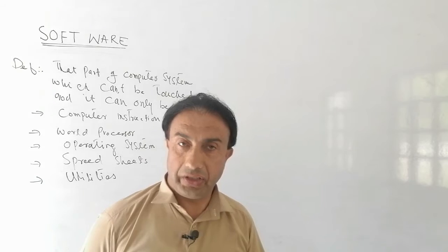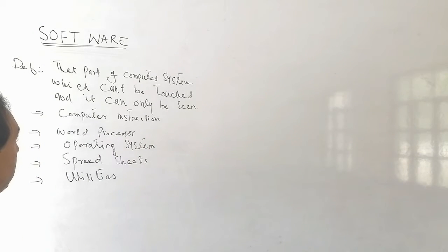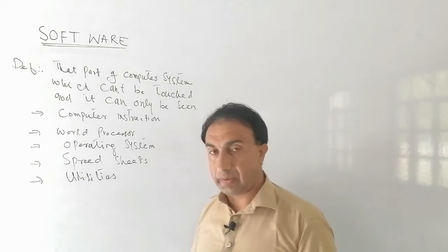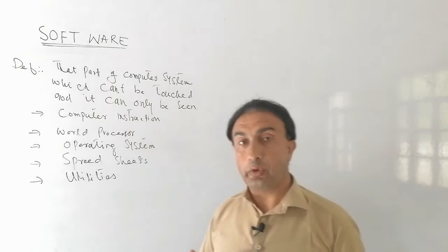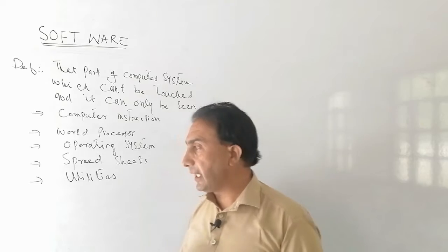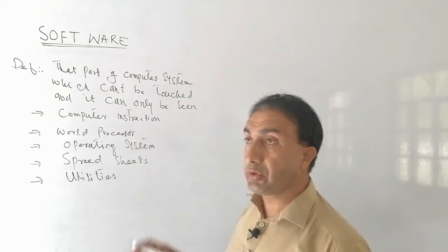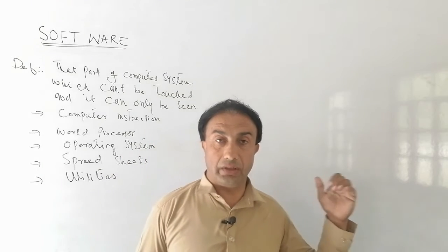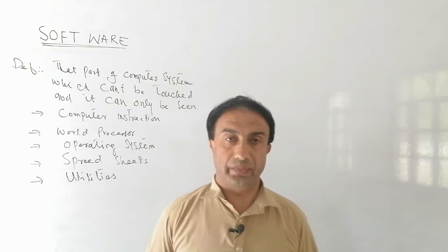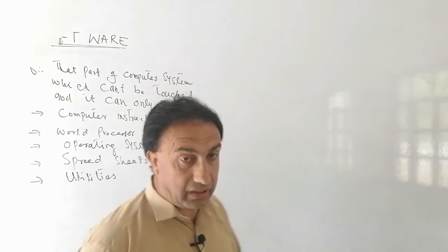To summarize: software is that part of the computer which cannot be touched but can only be seen. It consists of computer instructions used to control or manage all the resources of the computer, process user commands, and provide output. There are different types of software which we will discuss.